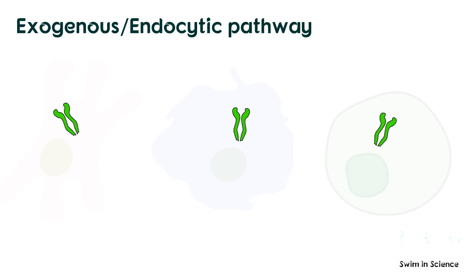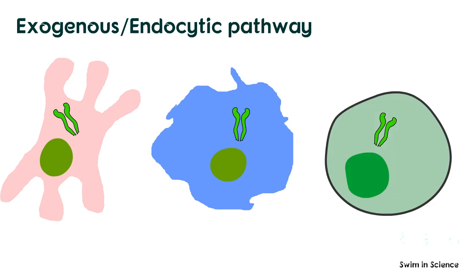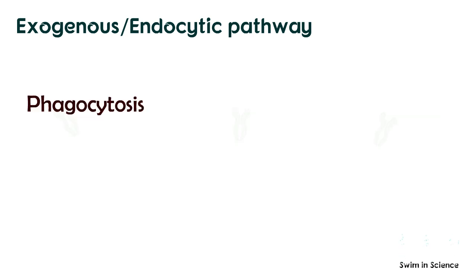MHC class II molecules are expressed by antigen-presenting cells, such as dendritic cells, macrophages, and B cells. These cells can internalize antigens by phagocytosis, endocytosis, or both.